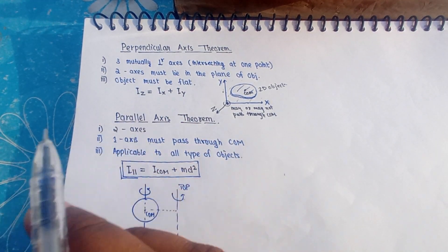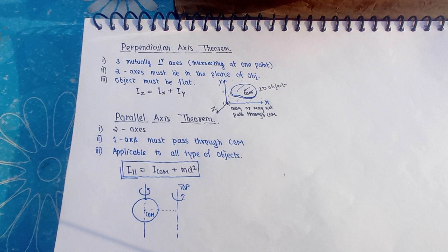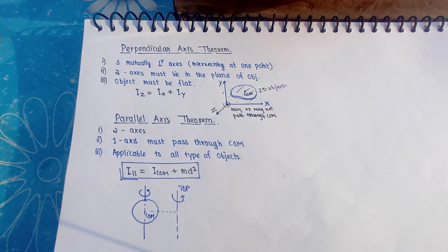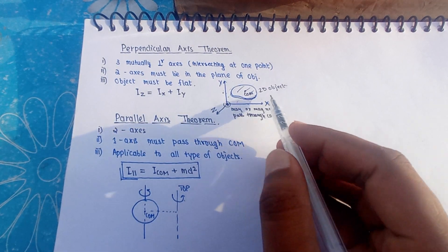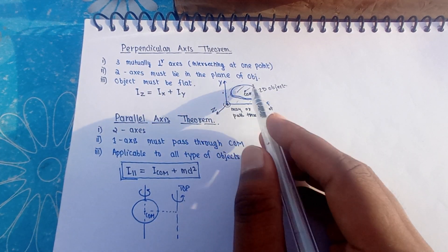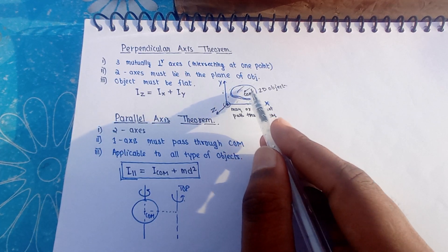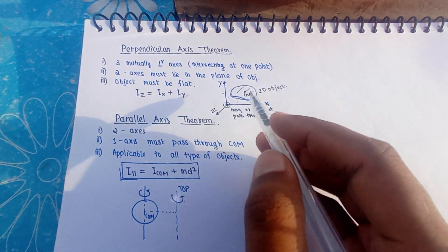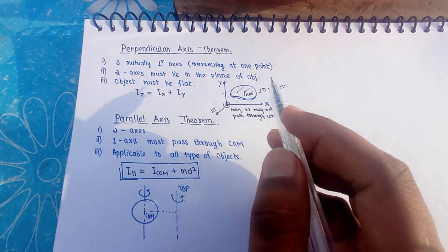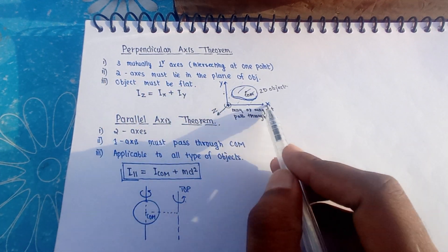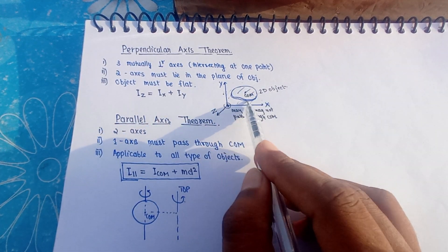In the perpendicular axis theorem, the object must be flat — it must be 2D, like a plate, paper, square lamina, or similar. Two axes must lie in the plane of the object. For example, I have taken x-axis, y-axis, and z-axis. Suppose this is a plate lying in the x-y plane — so the x-axis and y-axis both lie in the plane of the plate. This condition is fulfilled.